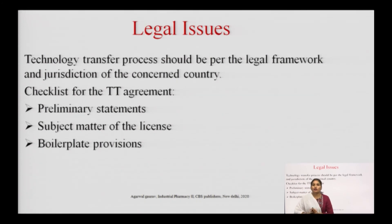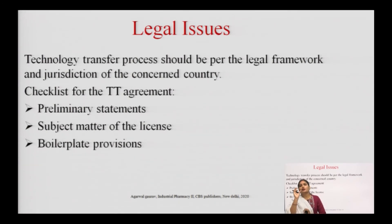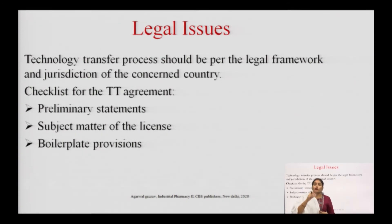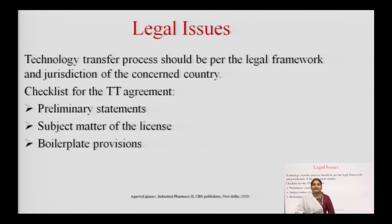The checklist for the technology transfer agreement: the TT agreement should include a preliminary statement, the subject matter of the license, and boilerplate provisions. The preliminary statement includes the information required before starting the process. The subject matter of the license describes to whom and on which subject the license is related and for which matter the license is prepared. All this information should be in the TT agreement.